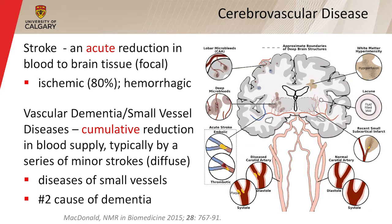Let's talk about stroke. Stroke is an acute reduction of blood flow to the brain. About 80% of them are due to ischemic events; the remainder are due to hemorrhagic events. We'll focus primarily on the ischemic events. Towards the end of my talk, I'll actually talk about something I'm more actively working in now, which is vascular dementia and small vessel diseases, looking at the cumulative reduction in blood supply.